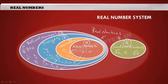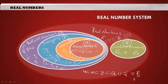To summarize: natural numbers are a subset of whole numbers; whole numbers are a subset of integers; integers are a subset of rational numbers; and rational numbers union irrational numbers equals real numbers. This is what you have learned about real numbers in your lower classes. In the next video, we are going to discuss the important concept — Euclid's division algorithm.